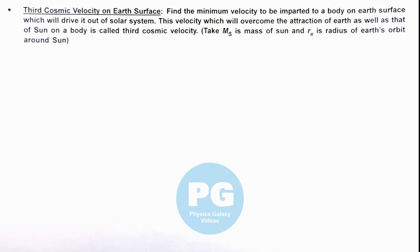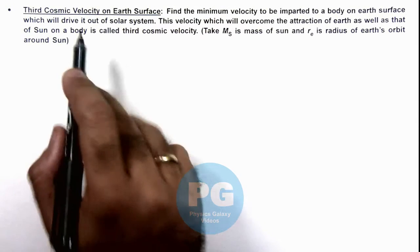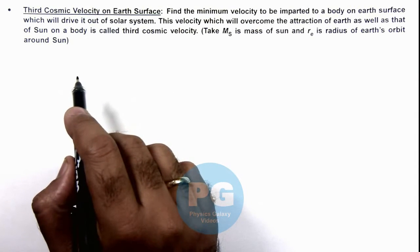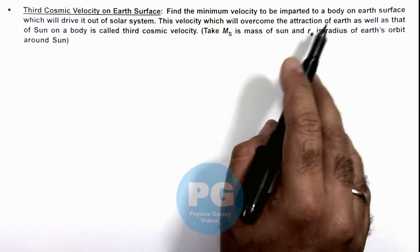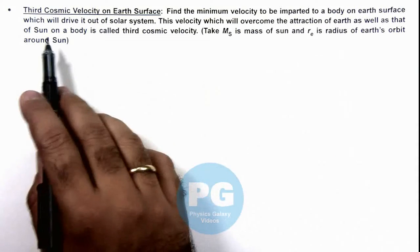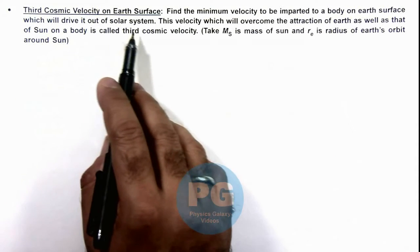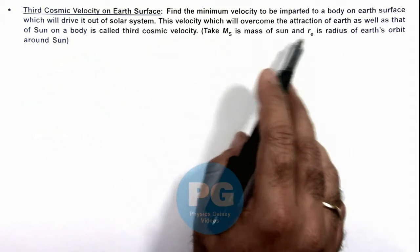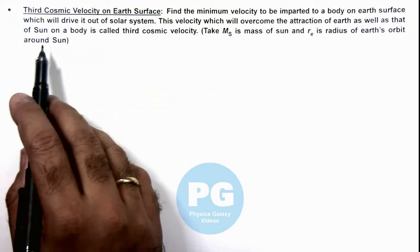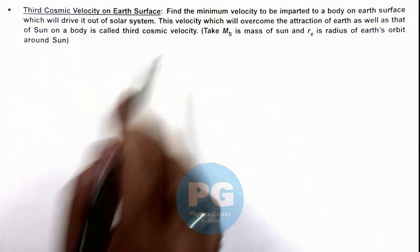In this illustration, we'll analyze the third cosmic velocity on Earth's surface. Here we are required to find the minimum velocity to be imparted to a body on Earth surface which will drive it out of the solar system. This velocity, which will overcome the attraction of Earth as well as that of the Sun on a body, is called third cosmic velocity.